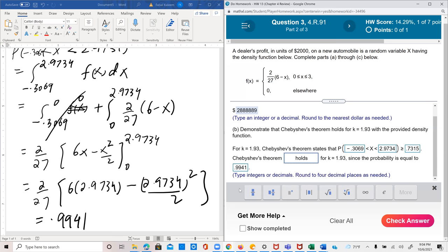Because Chebyshev's theorem says that this probability would be greater than 0.7315 and it is because it's 0.9941.